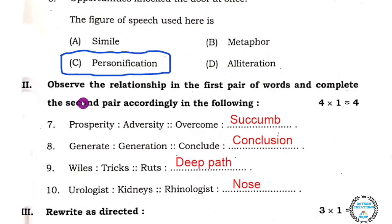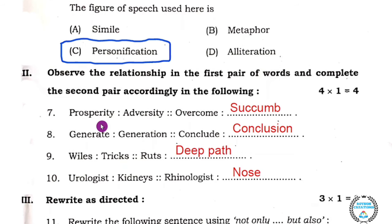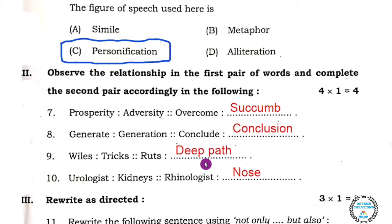Main number two: observe the relationship in the first pair of words and complete the second pair accordingly. There are four questions and each question carries one mark, so four marks total. Question seven: prosperity — adversity; overcome — succumb. Here they are asking for antonyms. Question eight: generate — generation; conclude — conclusion. Question nine: wiles — tricks; ruts — deep path. Question ten: urologist — kidneys; rhinologist — nose.